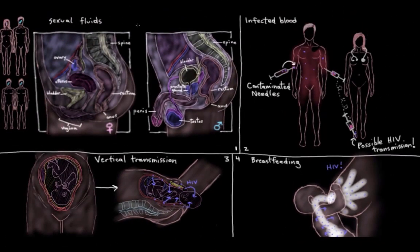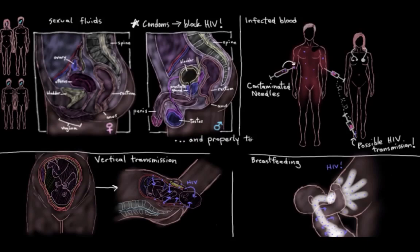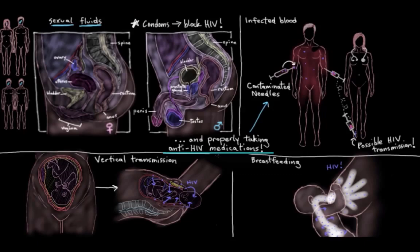The risk of sexual transmission goes way down if the infected person uses condoms to physically block HIV transfer, and also properly takes their HIV medication to reduce the viral load in their blood and bodily fluids. Properly taking HIV medications will also vastly reduce the risk of transmission via needle sharing, mom-to-newborn transmission, and via breast milk.